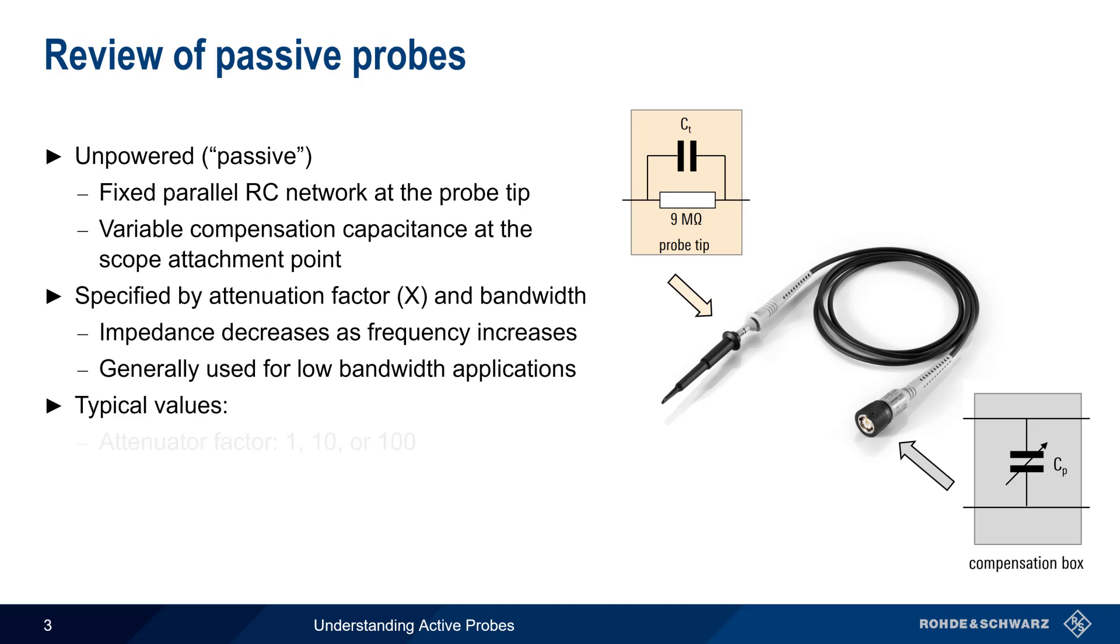Typical passive probes have an input attenuation factor of 1, 10, or 100 times, and bandwidth of up to about 500 MHz or more, although bandwidth also tends to be a function of the probe's attenuation factor.